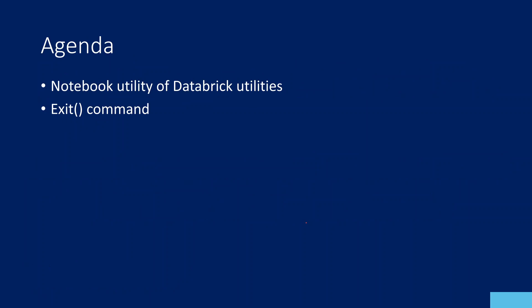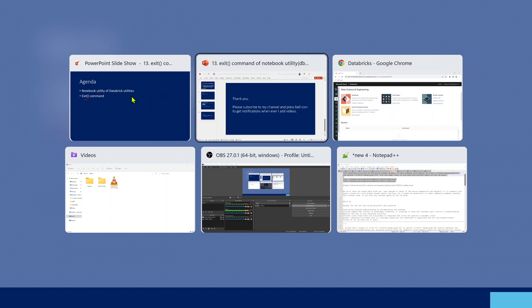If you have watched all my previous videos in the Azure Databricks playlist, by this time you know what Databricks utilities is. We know that inside Databricks utilities there are a lot of utilities available, such as filesystem utilities, library utilities, and also the notebook utility, and lot more. We are discussing about each and every utility step by step. This video we are focusing on the command called exit, which is inside the notebook utility. Let me practically show you this.